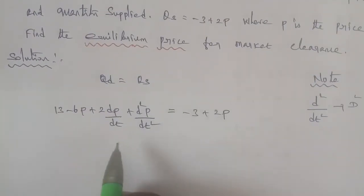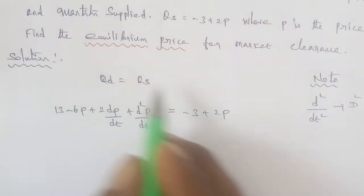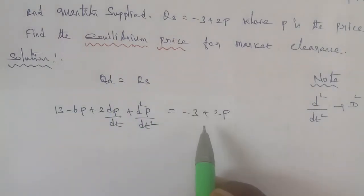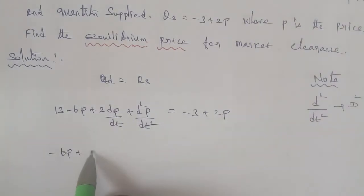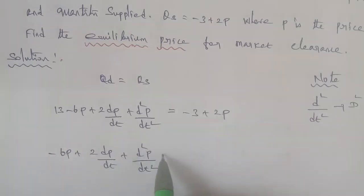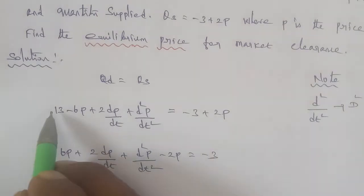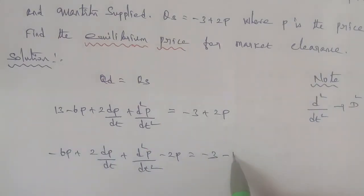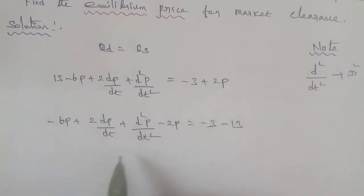Moving constants to one side: minus 6p plus 2 dp/dt plus d²p/dt² plus 2p equal to minus 3 minus 13. The first term, the highest degree is d²p/dt².